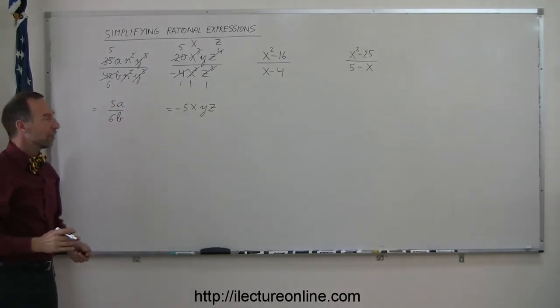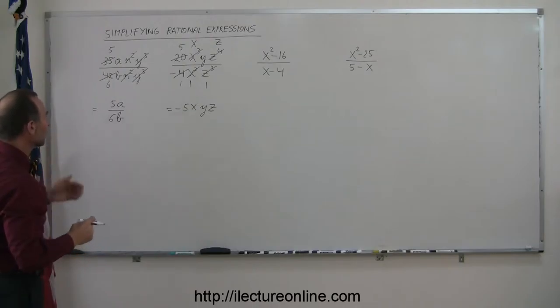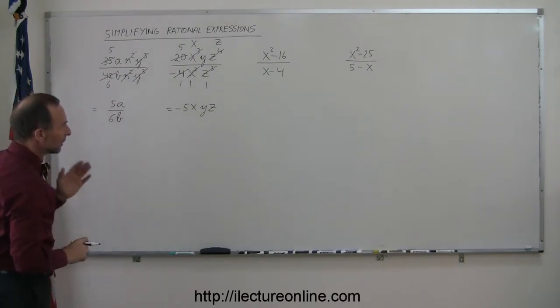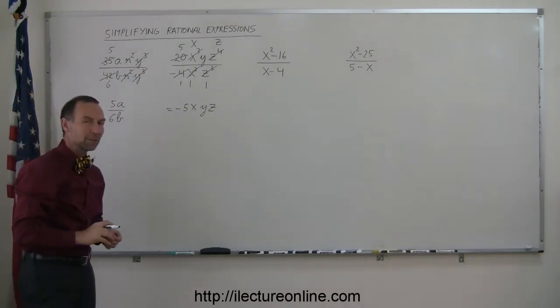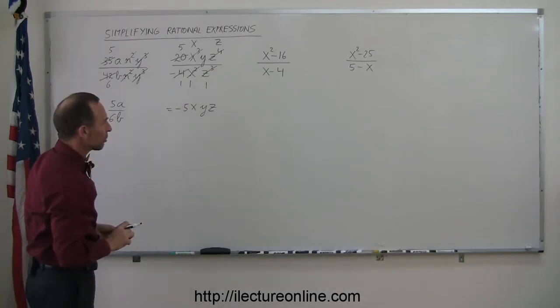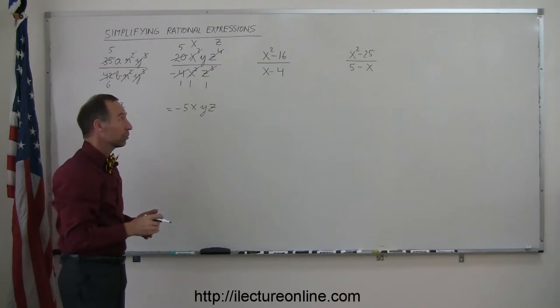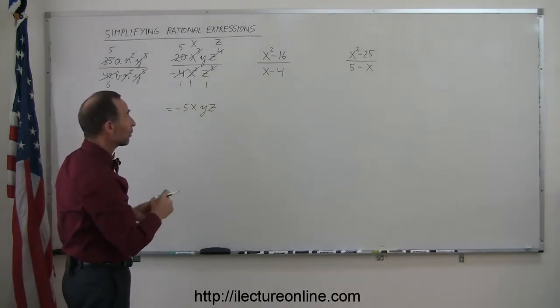Okay, so those are fairly straightforward. We just simply look for things that are common in the numerator and denominator and then cancel them out. But now when you see something like our next problem, it's not as straightforward. In this case, we probably want to go ahead and try to factor the numerator and see if we can simplify something.